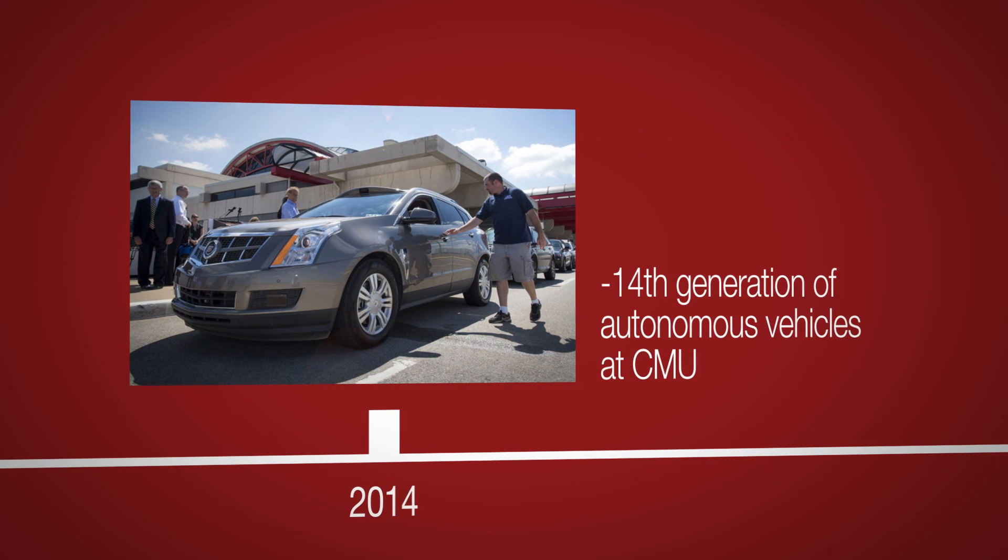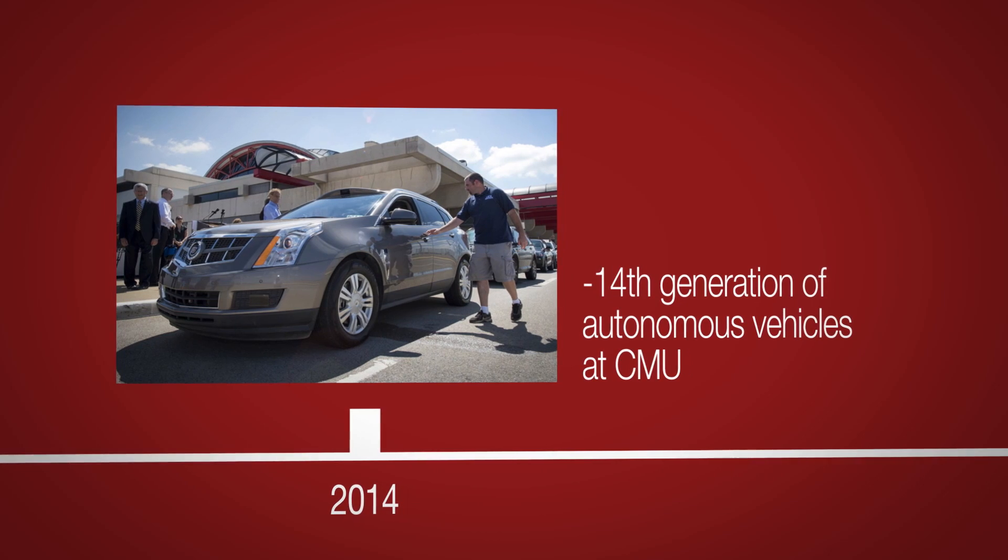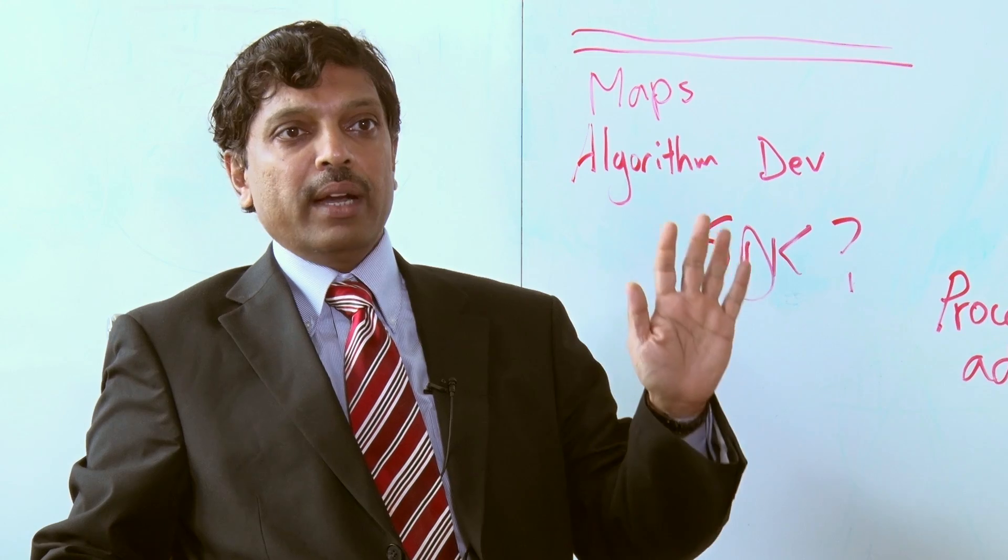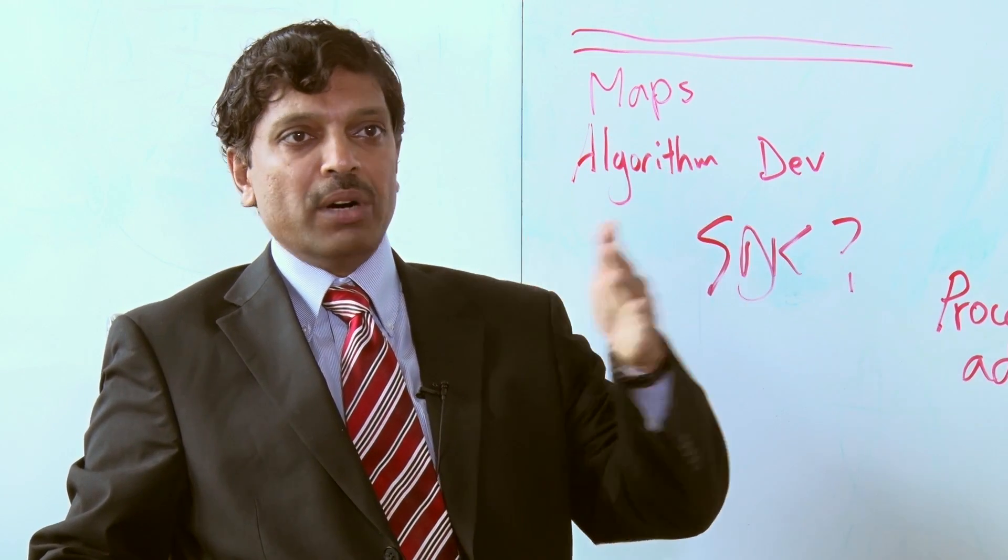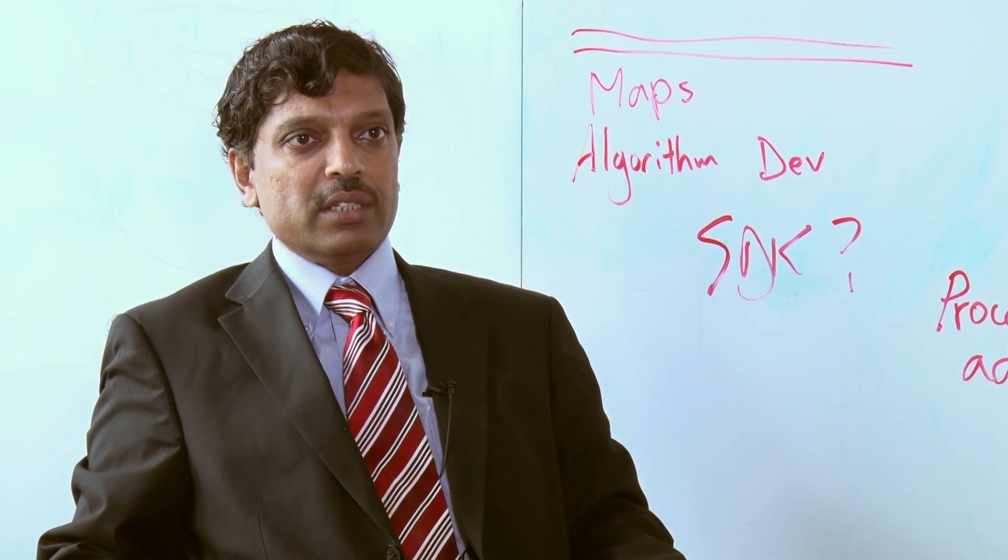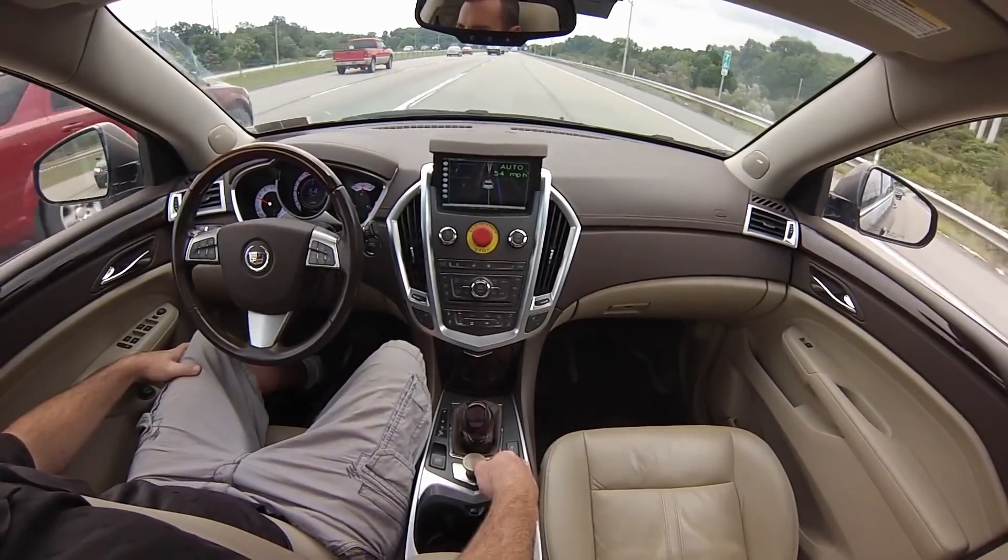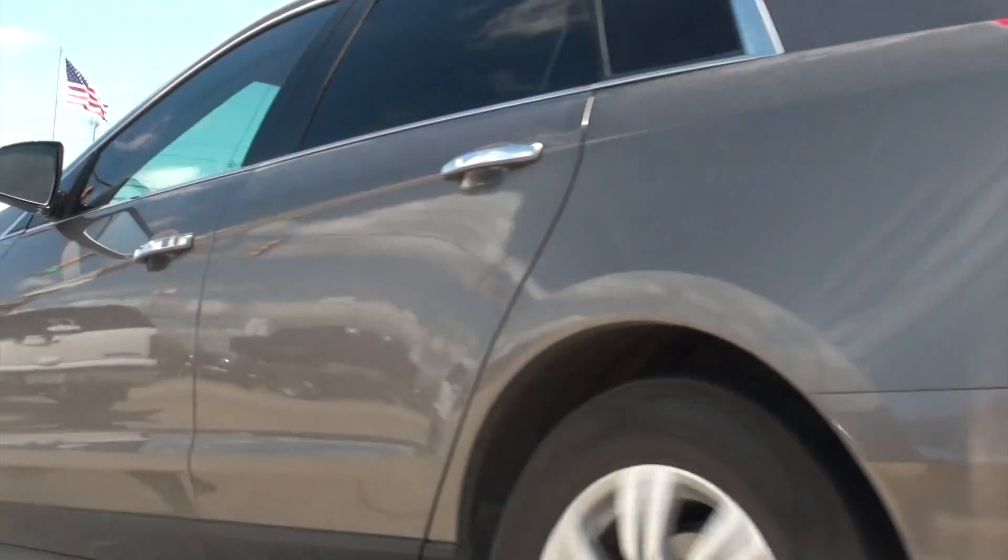We have a 2011 Cadillac SRX crossover SUV that has been fully automated. It can drive on highways at highway speeds, even 70 miles per hour. It can take an exit ramp, take an entry ramp, merge, and change lanes. It's capable of doing all of that. It can drive in urban settings, suburban settings, and change lanes in a suburban environment.